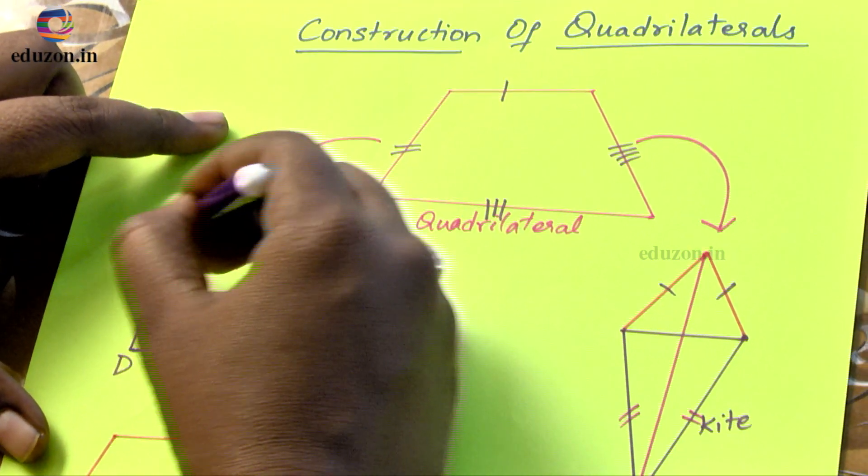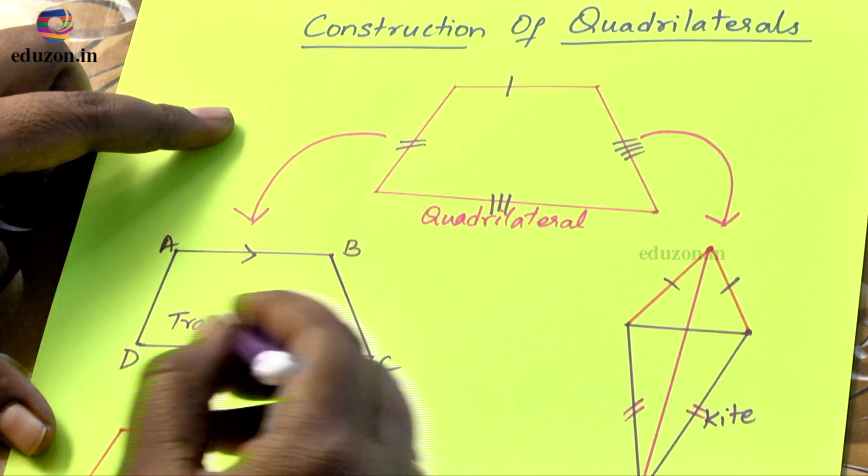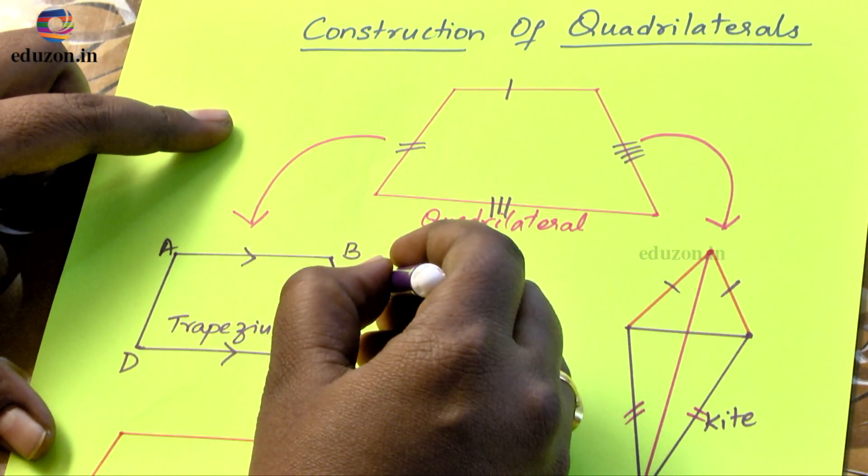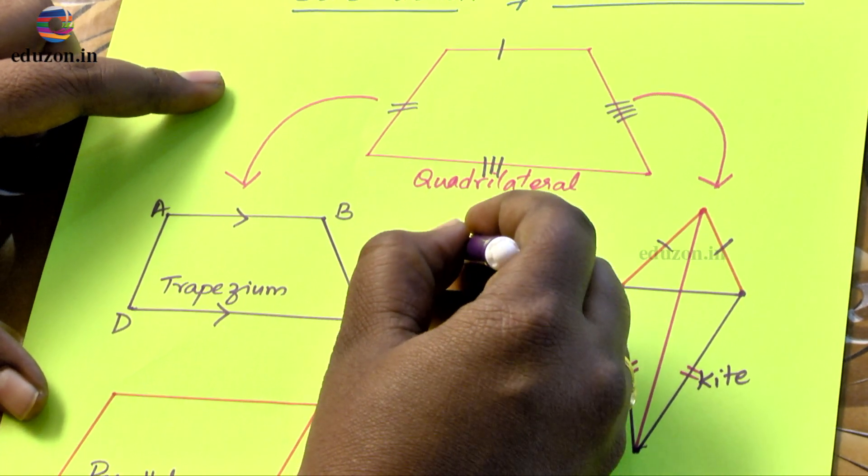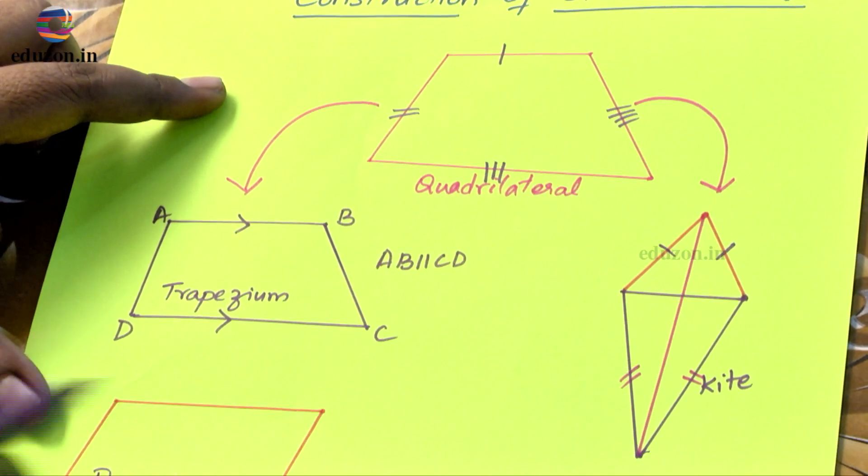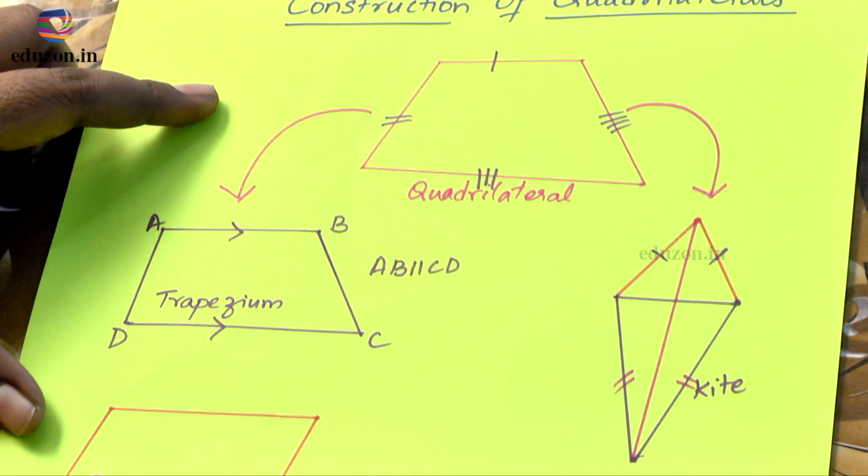Now here side AB and side CD are opposite to each other and they are parallel, that is I can write as AB parallel to CD. So in such case, the quadrilateral is named as trapezium.